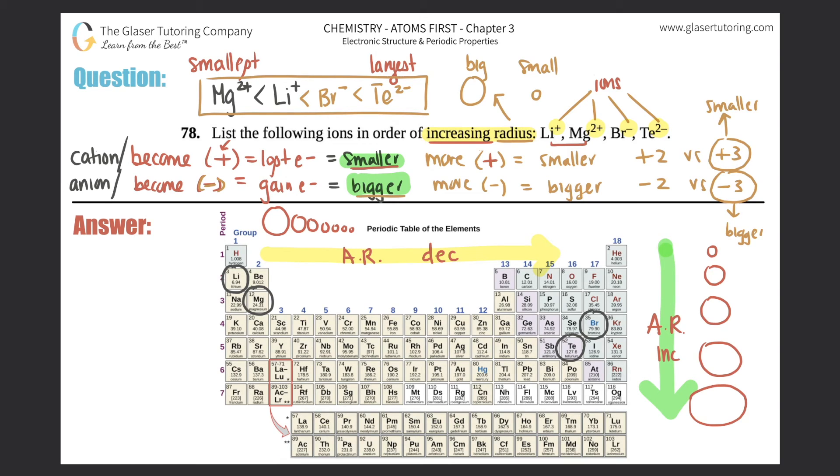Good to know the trends, but unfortunately these were all jumbled so there had to be a different way. Especially if they give you ions, especially if they give you charged atoms, use that trend of going from negatives to positives and vice versa.